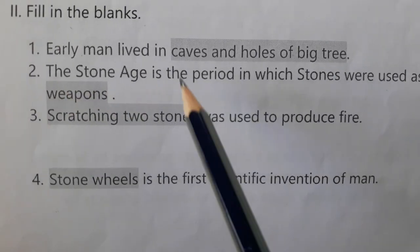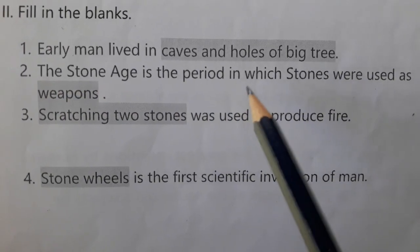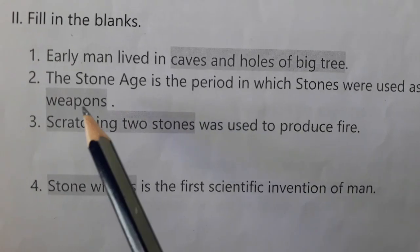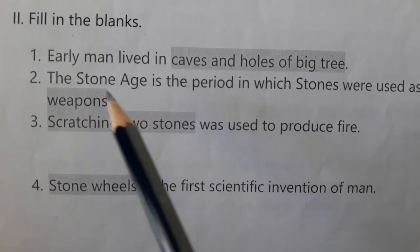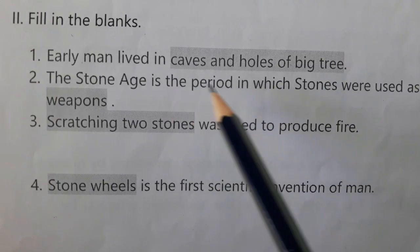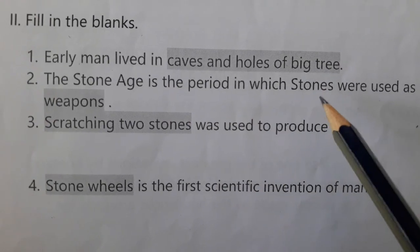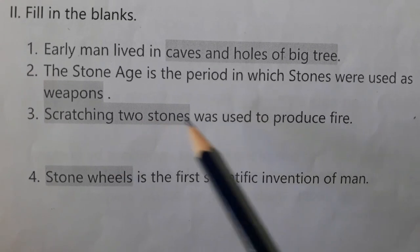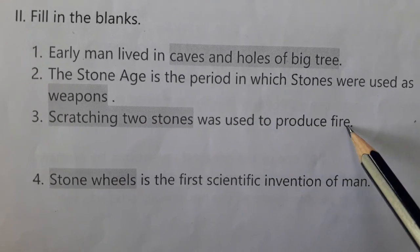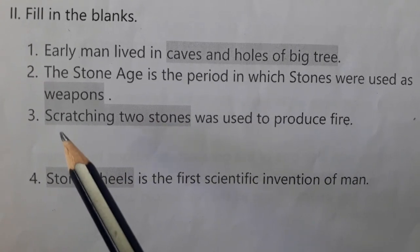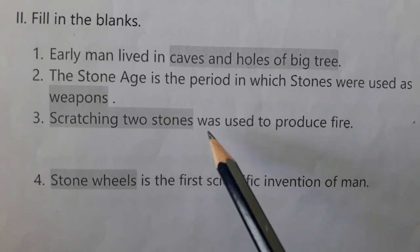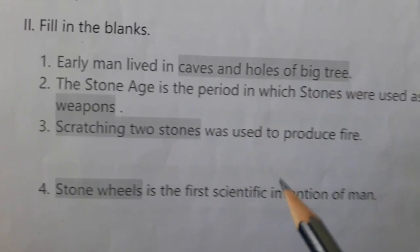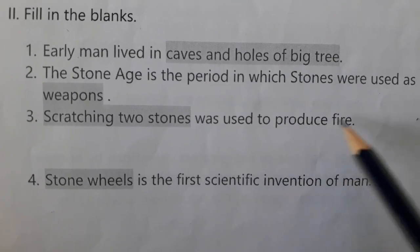Second question: The stone age is the period in which stones were used as ___. Answer: weapons. The stone age is the period in which stones were used as weapons. Third question: ___ was used to produce fire. Answer: Scratching two stones was used to produce fire.